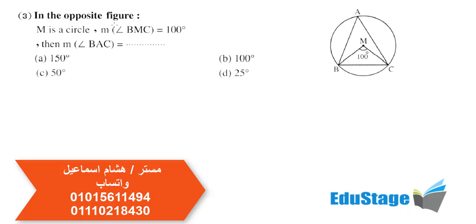In the opposite figure, M is a circle, and the measure of angle BMC, the central angle, equals 100 degrees. Then what is the measure of angle BAC? Angle BAC is an inscribed angle subtended by arc BC.